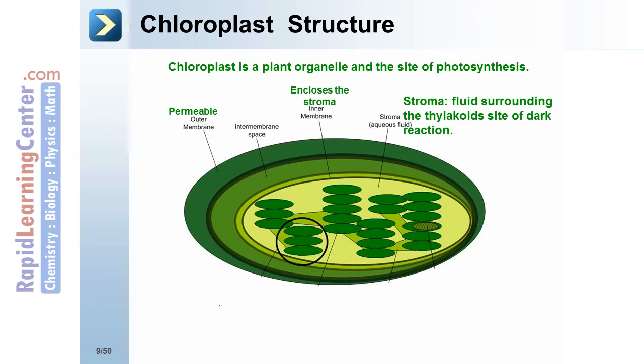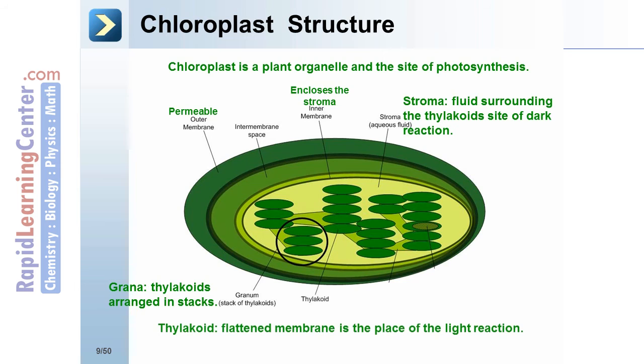Stroma: fluid surrounding the thylakoids, site of dark reaction. Grana: thylakoids arranged in stacks. Thylakoid: flattened membrane is the place of the light reaction. Remember, thylakoid, place of the light reaction.